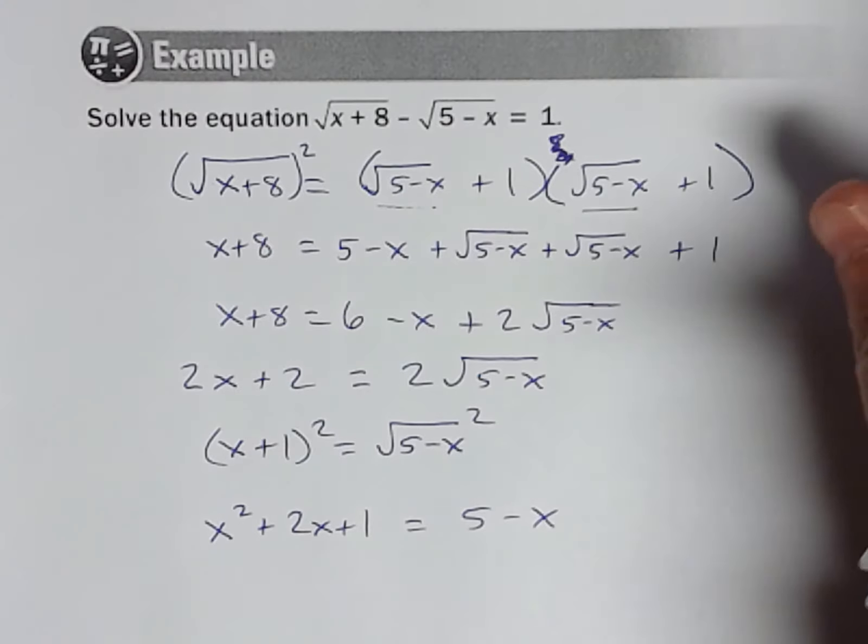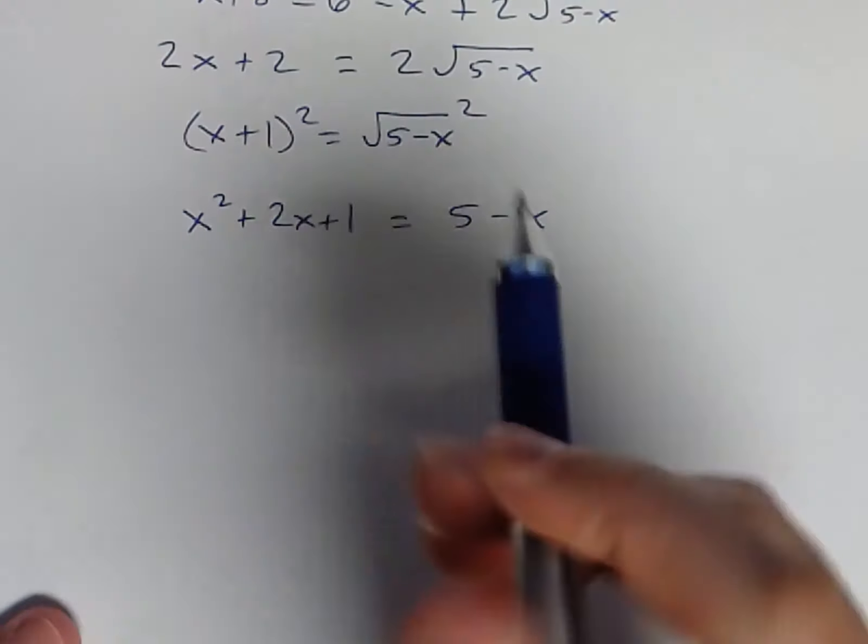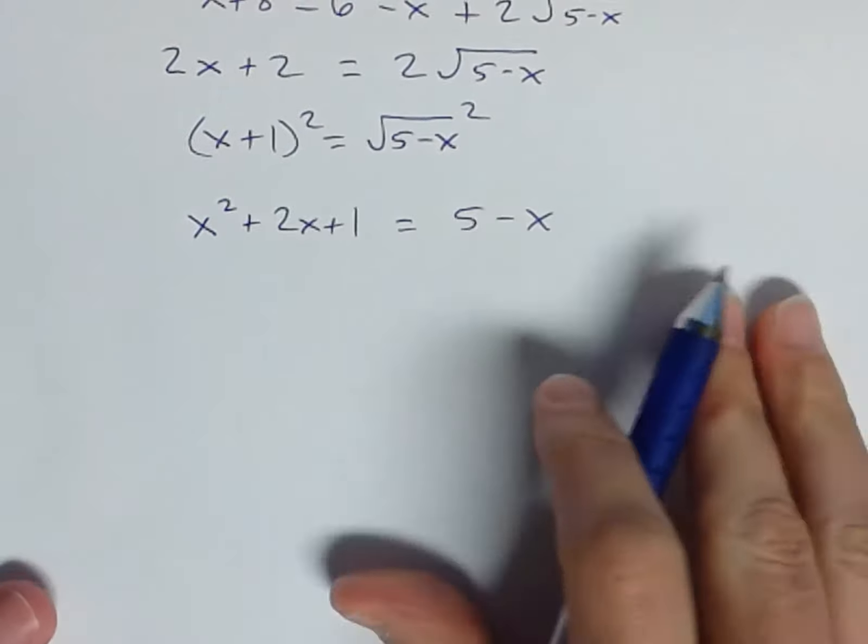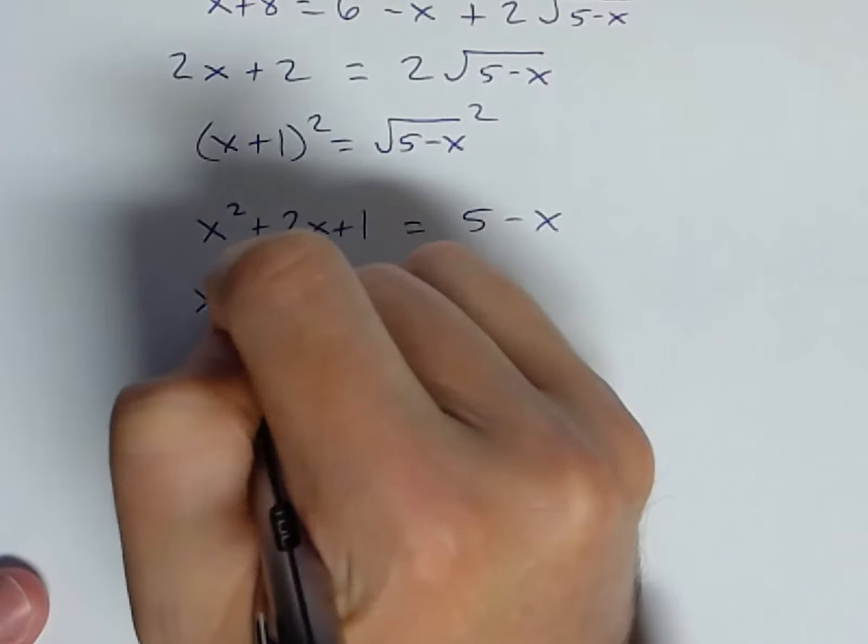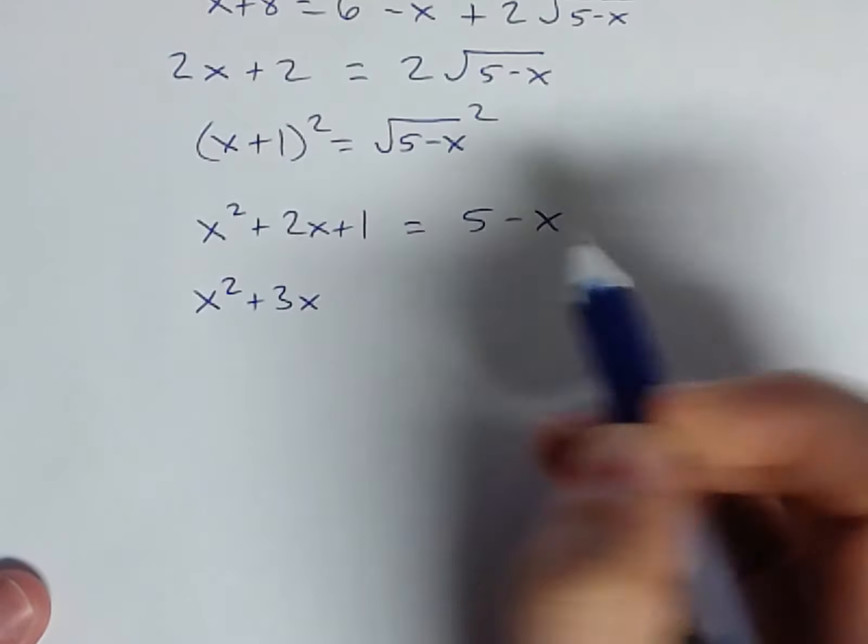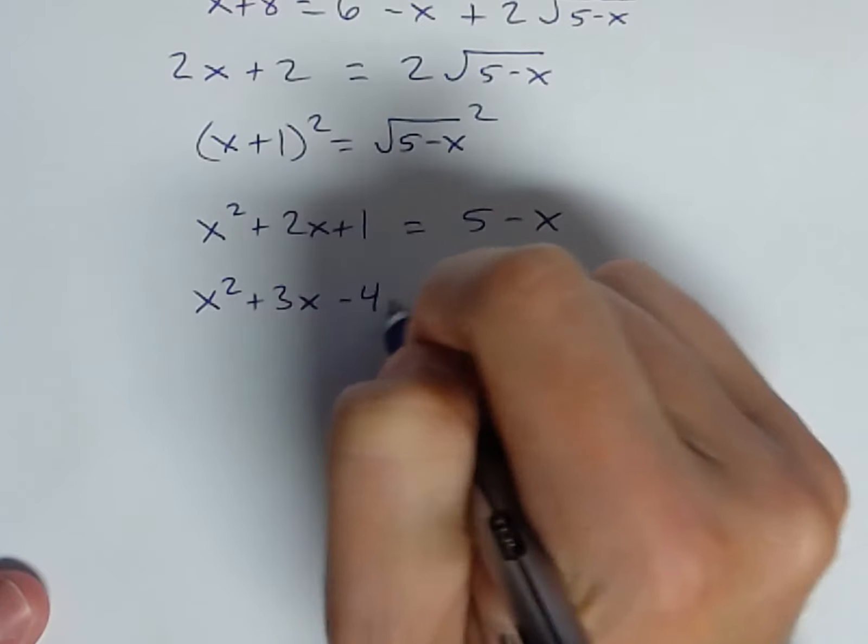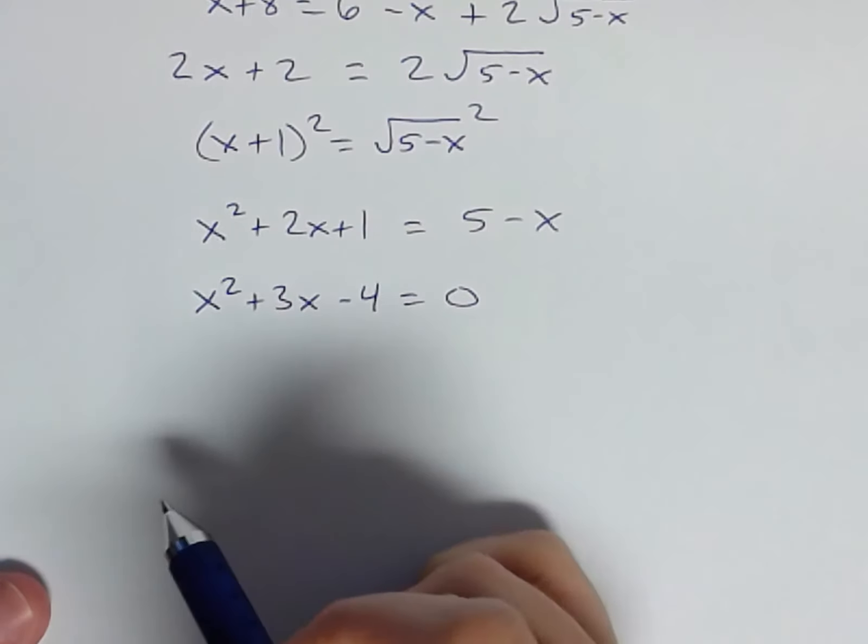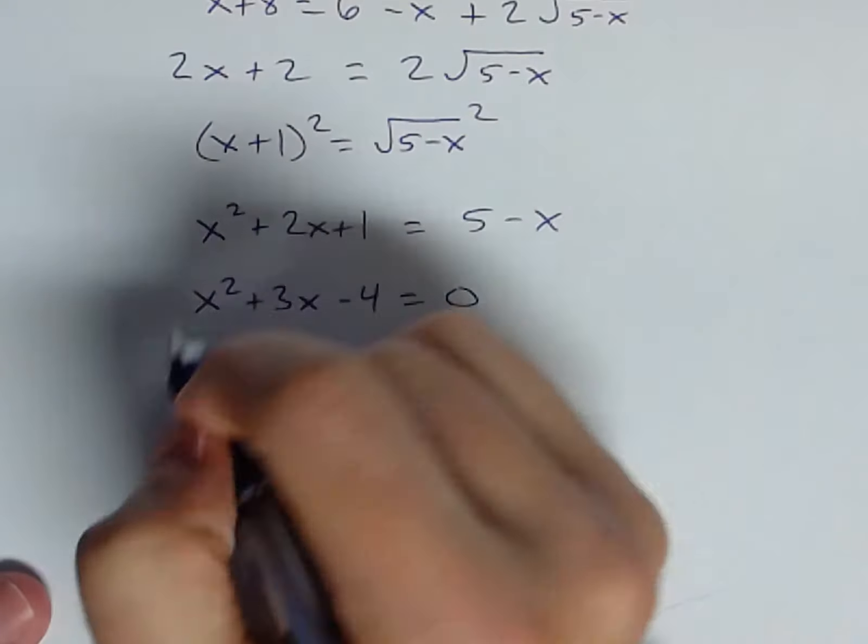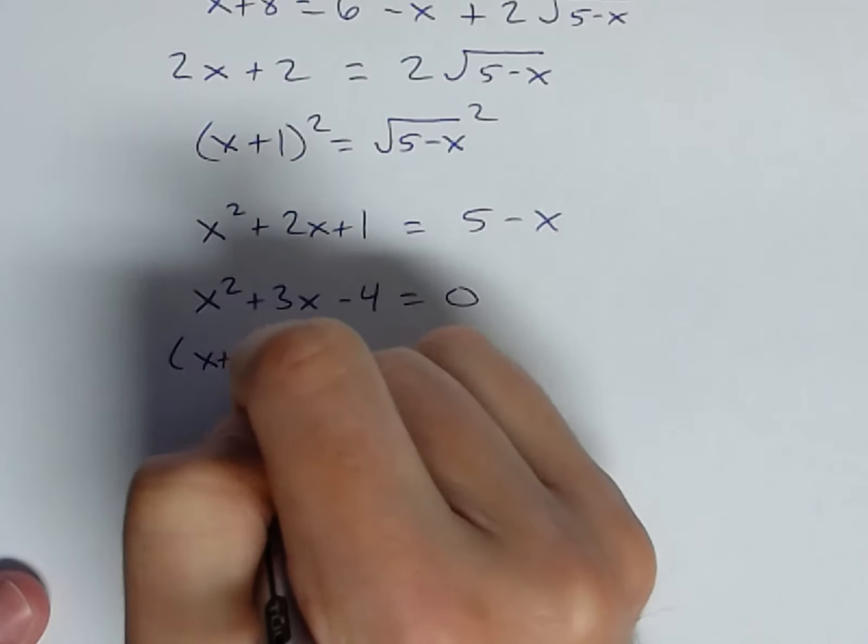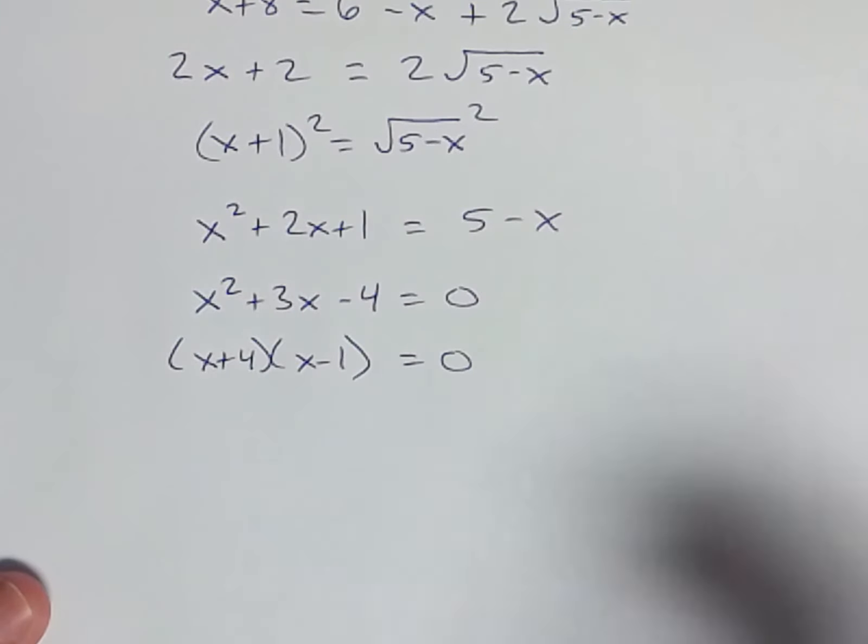After all that, I've still got a quadratic. So let's just keep going here. Give myself a little more room. So let's get everything on the same side, set it equal to 0. So add that x over. So x squared plus 3x and subtract, so 1 minus 5 minus 4 equals 0. Fortunately, they gave us a nice quadratic at least. This guy will factor. So x plus 4, x minus 1 equals 0.